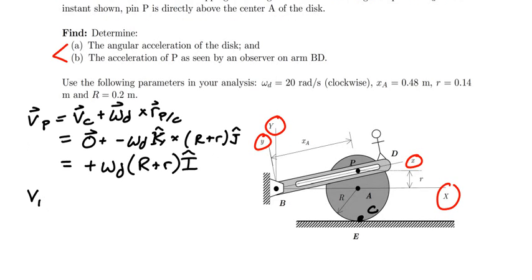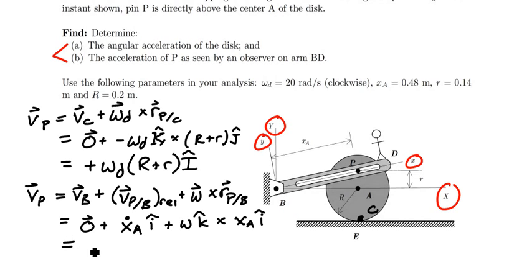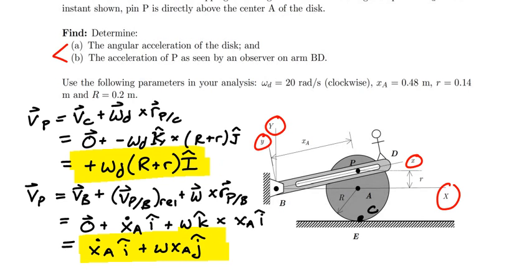I can also express the velocity of point P as the velocity of point B, plus the velocity of P with respect to B as seen by the observer, plus omega of the rotating frame cross r of P with respect to B. Substituting: velocity of B is zero; velocity of P with respect to B relative to the observer is xa_dot in the little i direction; plus omega in the little k cross xa in little i, giving xa_dot in little i plus omega times xa in little j. Now I have two expressions for velocity of P that I need to equate.